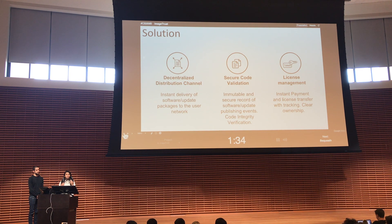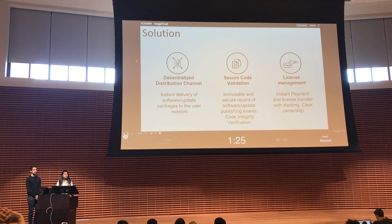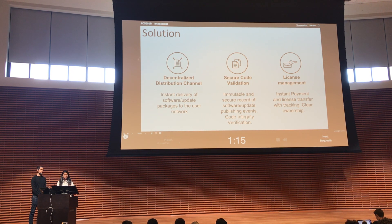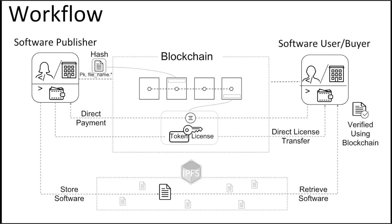For the licensing problem, we propose an ERC-721 token, which makes it easy to procure licenses as a token, transfer them, and also have revocation processes when the life of a token comes to an end. Here is a workflow from a software publisher perspective: the developer or company has their wallet, they can publish the hash of the file or package on the blockchain, and they can choose to put the package itself on the IPFS system.